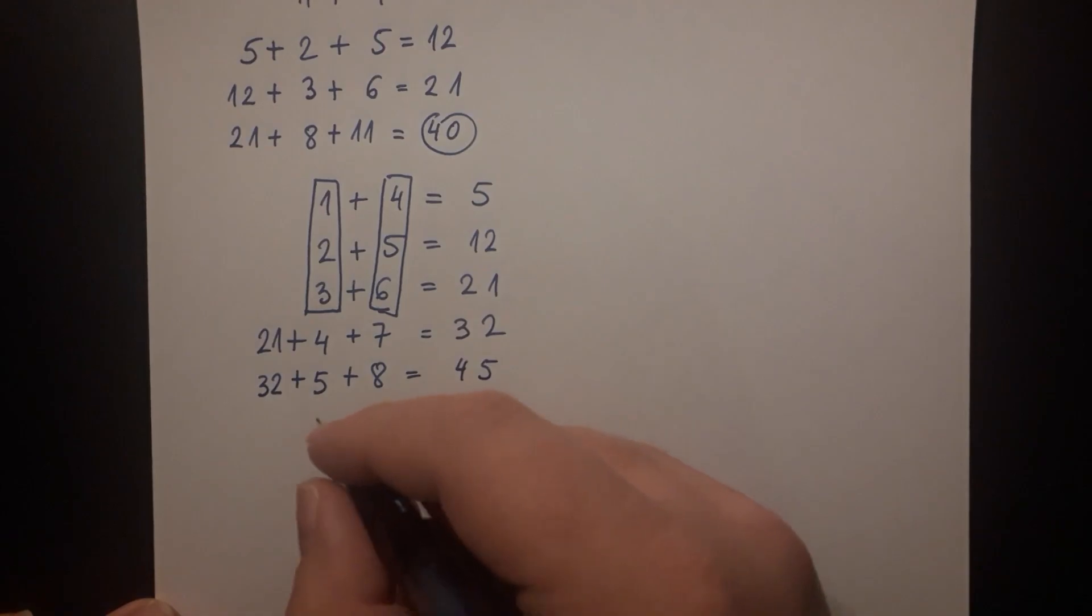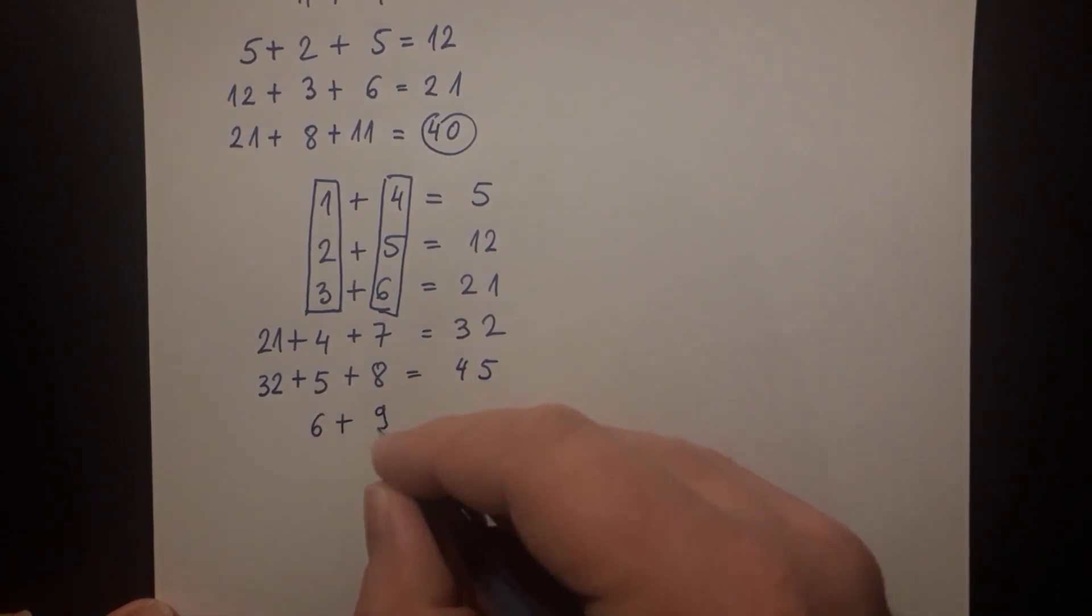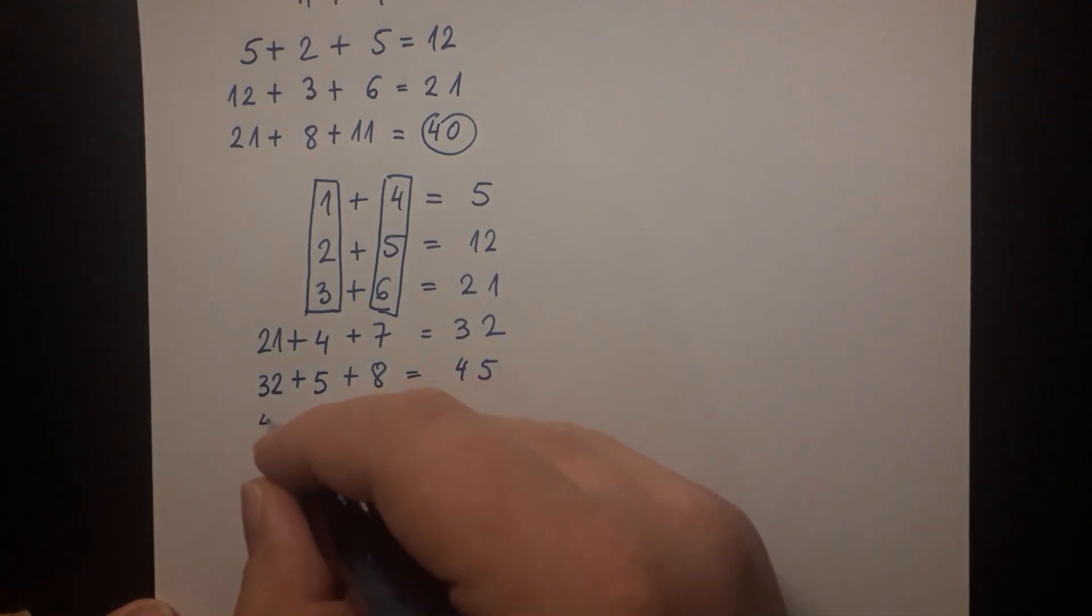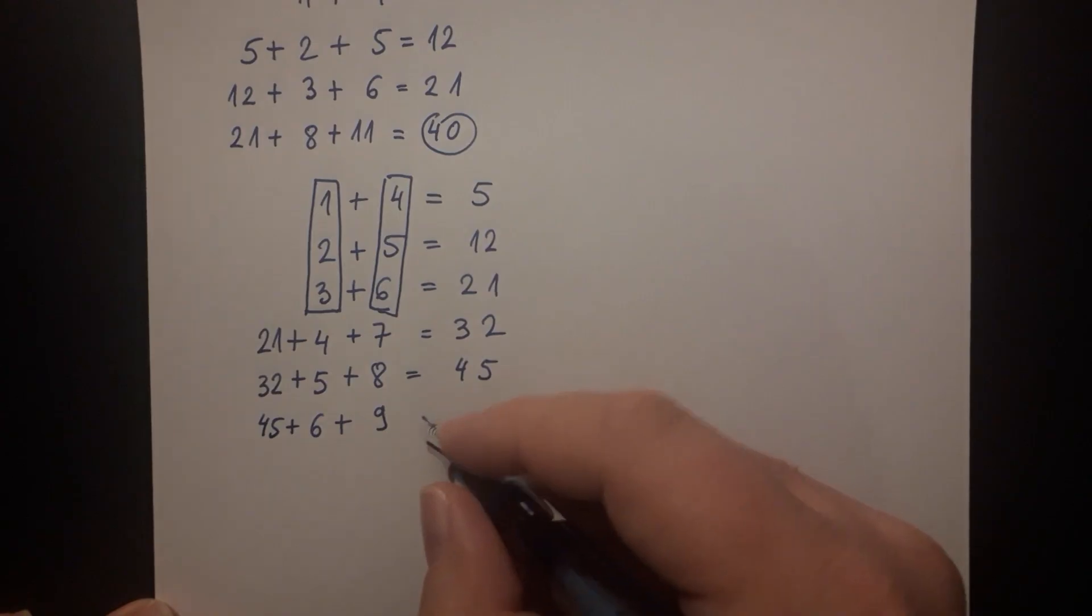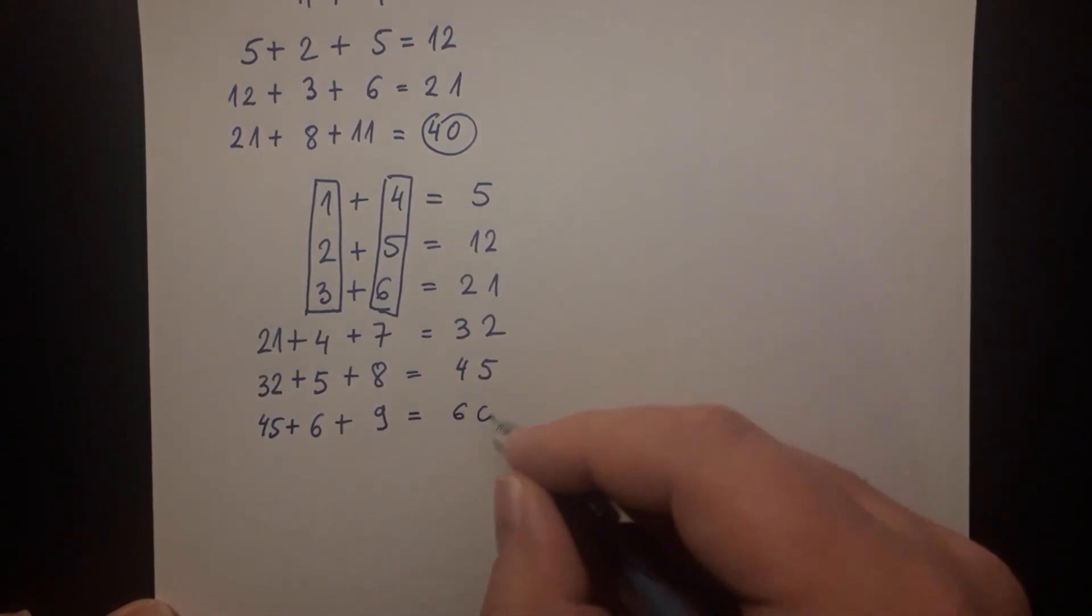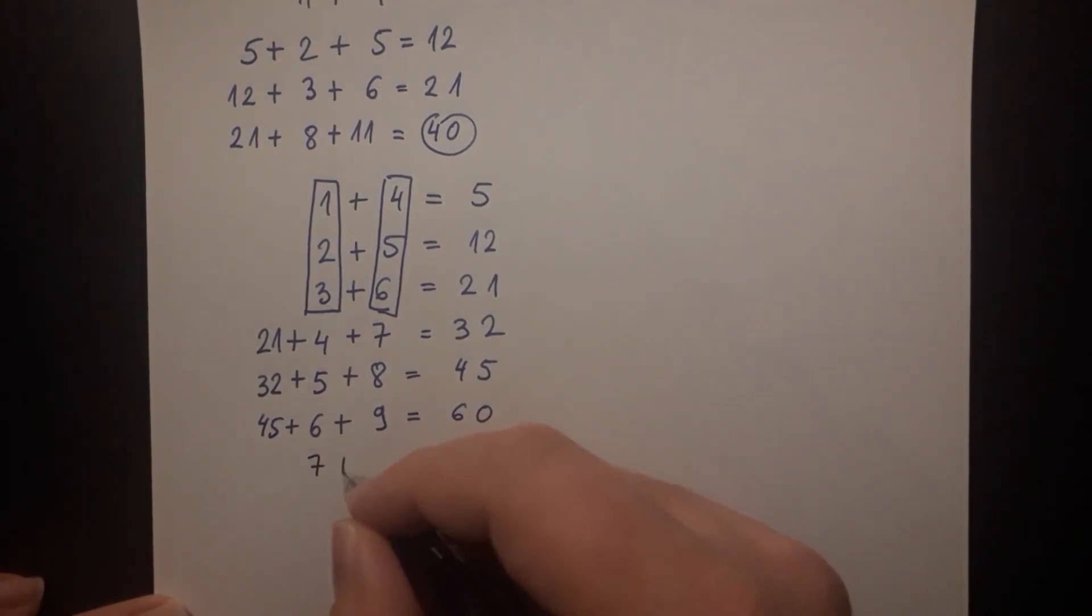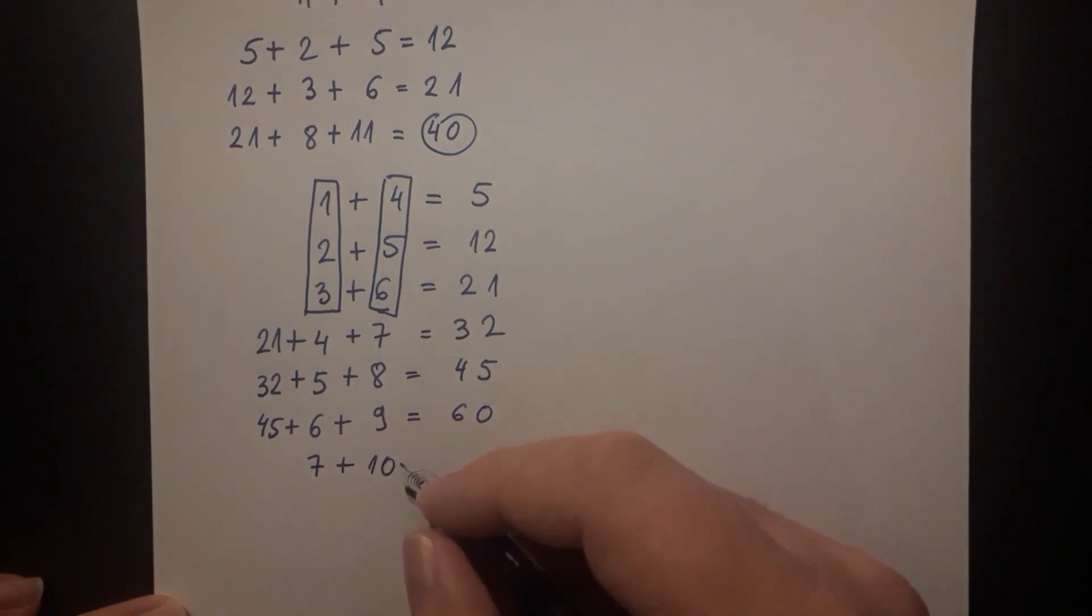The next line is 6 plus 9. And when we add the previous result to it, we get 45 plus 6 plus 9 and that is equal to 60. Then we have 7 plus 10 and add 60 to that and we get 77.